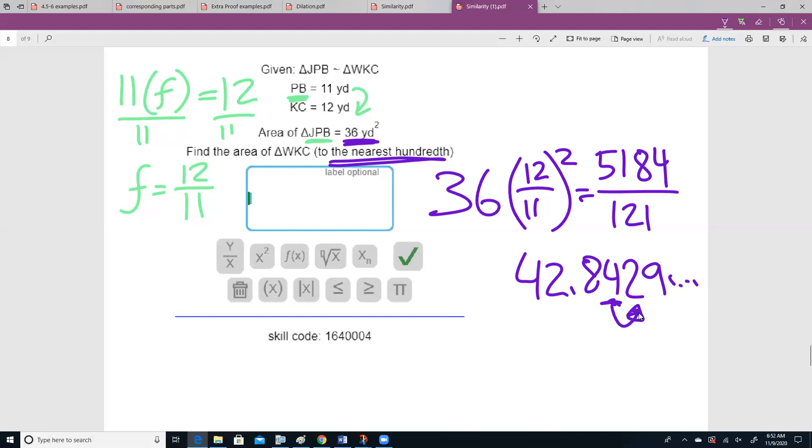Looking at this 4 and this 2, will the 2 make the 4 round up or stay the same? 42.84. In this case, it is yards squared again.